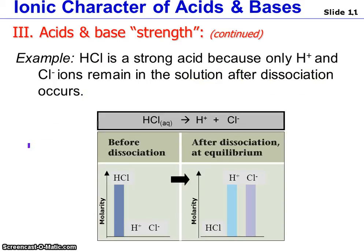If we look at an example of hydrochloric acid, HCl is a strong acid. If we look at a graph of the amount of each substance in a solution before and after it dissociates: before dissociation, the molarity of hydrochloric acid is very high, and the hydrogen ion and chloride ion concentrations are very low. Once the hydrochloric acid has had enough time to dissociate, we see that there is none of it left — it has completely broken down into hydrogen ions and chlorine ions.